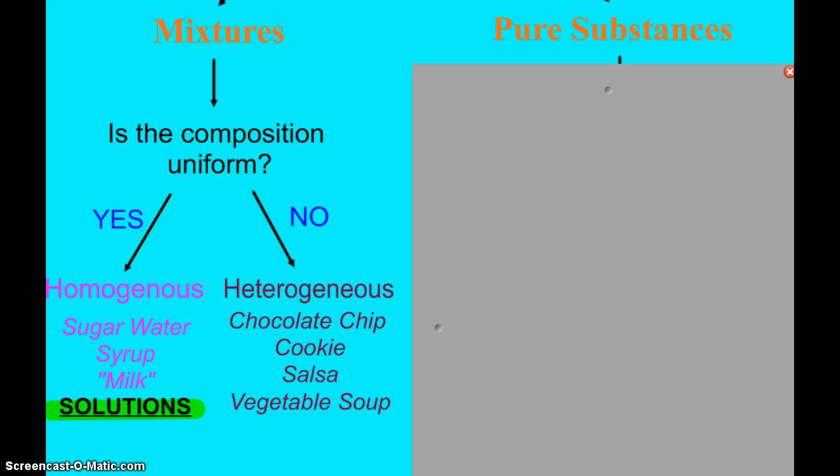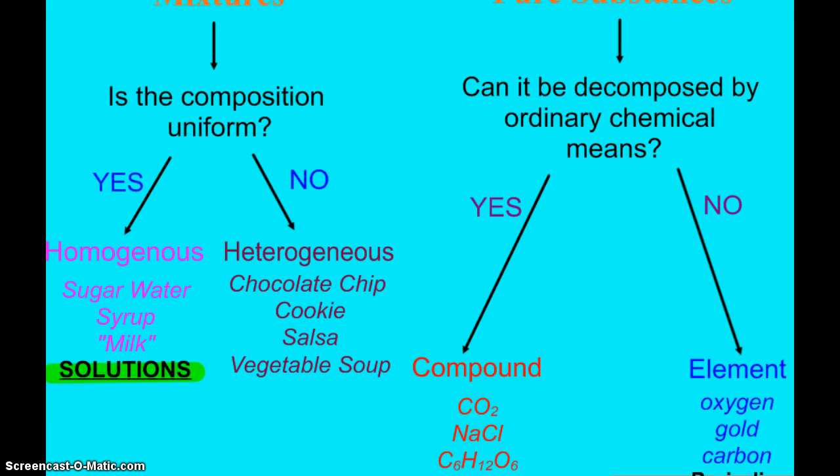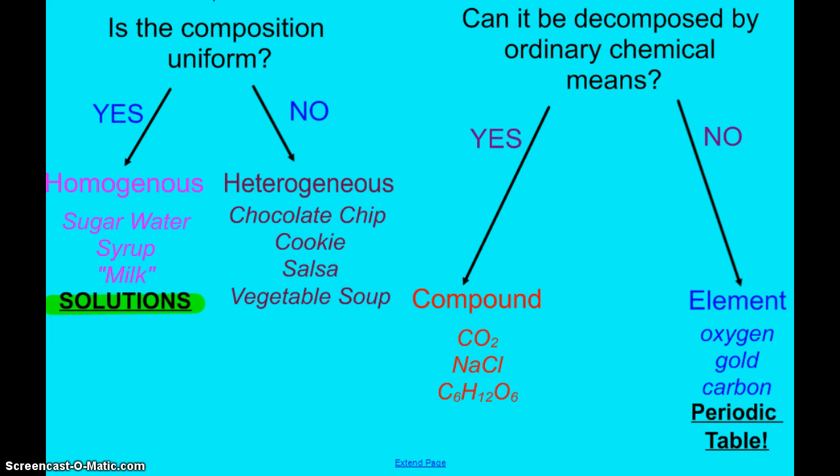Now, on the pure substance side, can you break down the substance by ordinary chemical means? If you can, then you have yourself a compound. If you cannot, then it's an element. So, your examples of elements, anything on the periodic table. And then compound again, any of those different formulas.